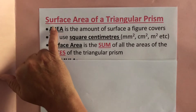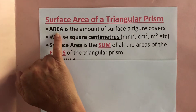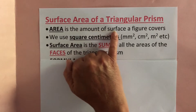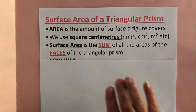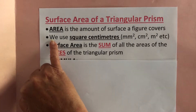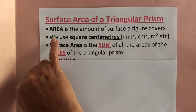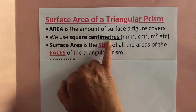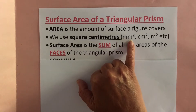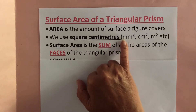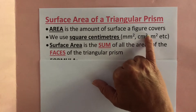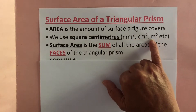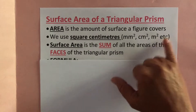Of course if we're doing surface area we're going to be saying area quite a few times. The area is the amount of surface a figure covers. When we are calculating the area we use square units — for example, square millimeters, square centimeters, square meters, square kilometers, etc.